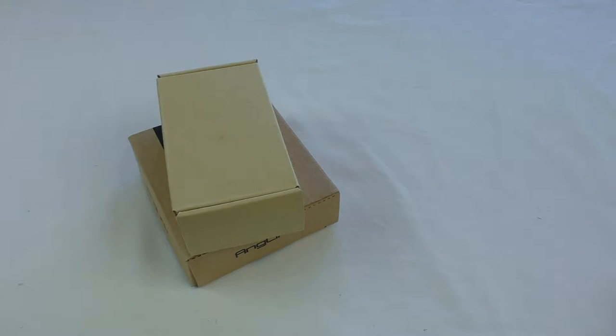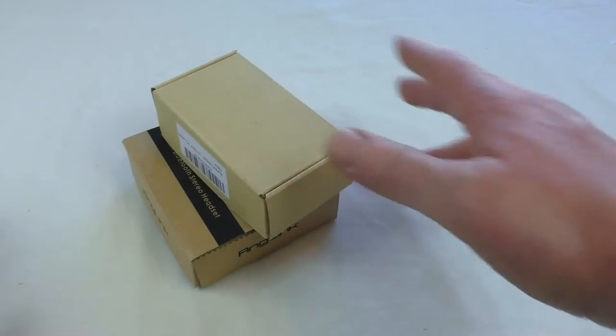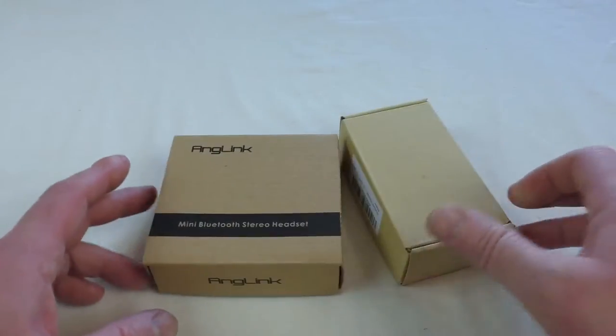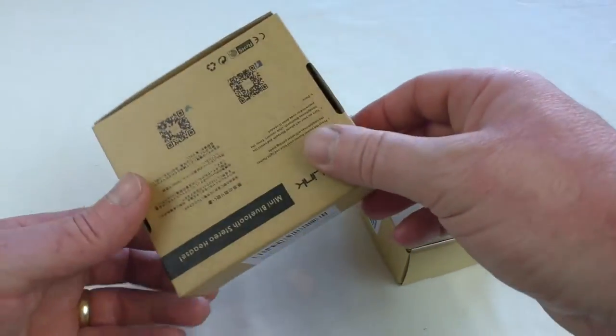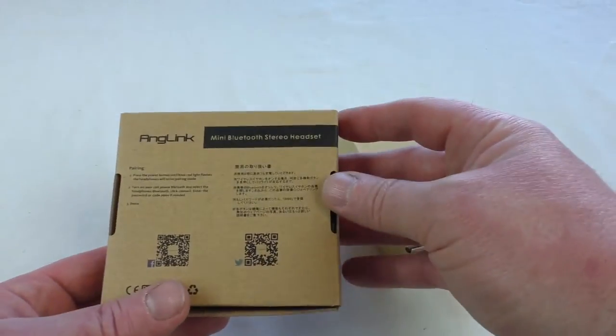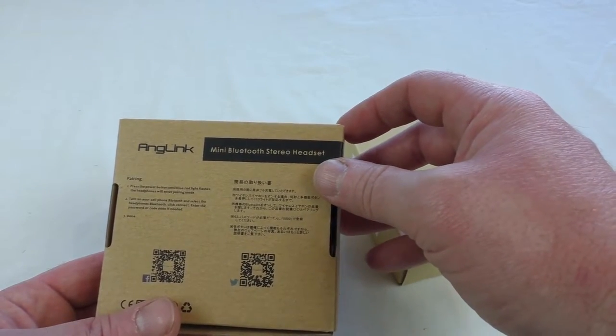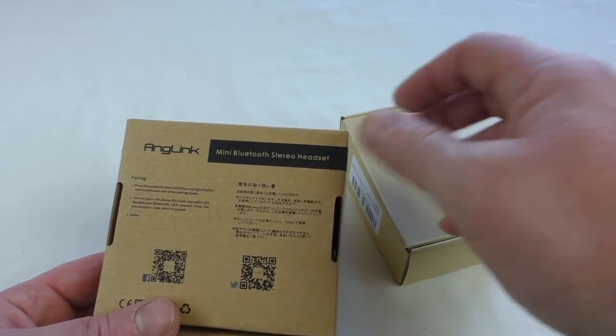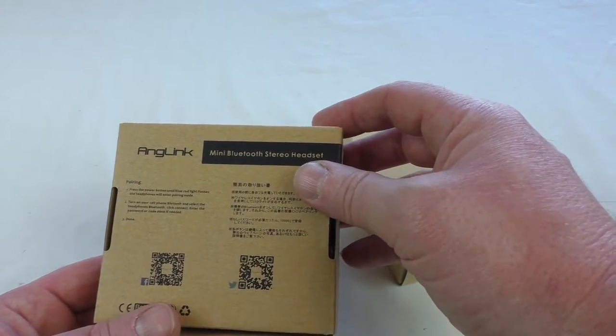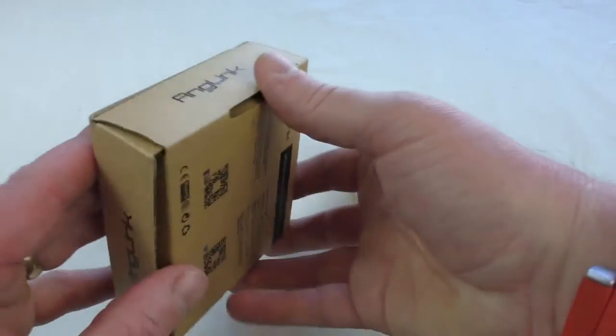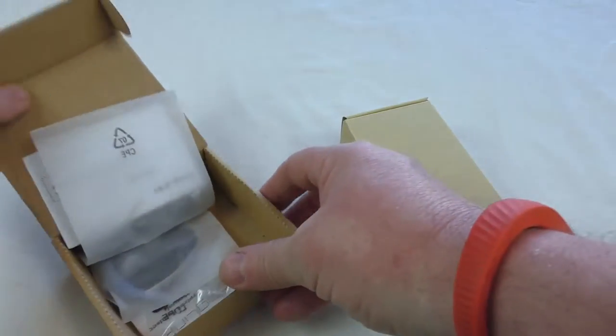All right guys, I've got a double unboxing for you and these are both from Anglink. What they actually are is Bluetooth headsets to be able to call hands-free and I'm assuming you'll be able to listen to a little bit of music through one ear. So let's have a look. Now there's two here, they're both from Anglink. I will do two separate review videos.